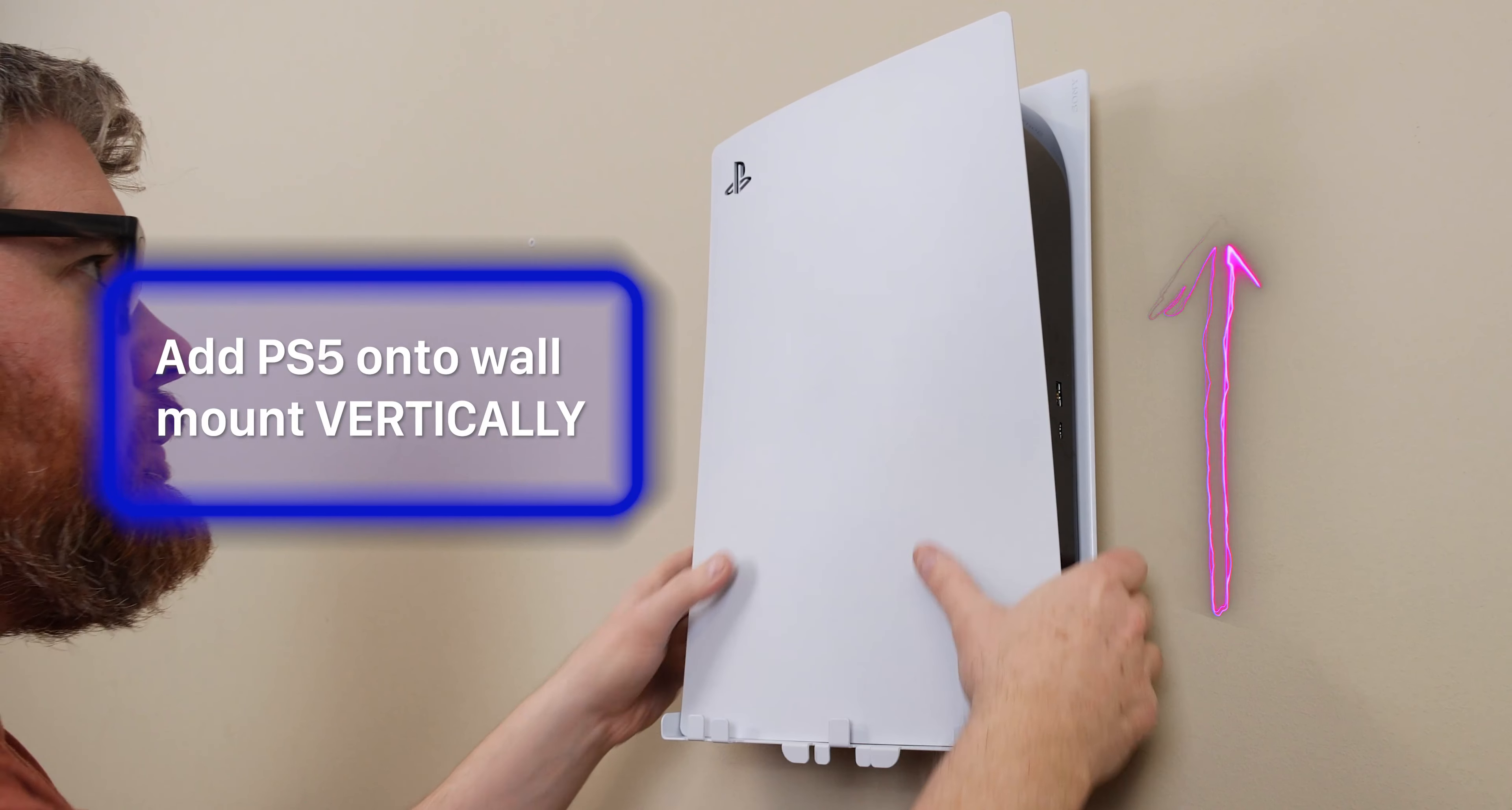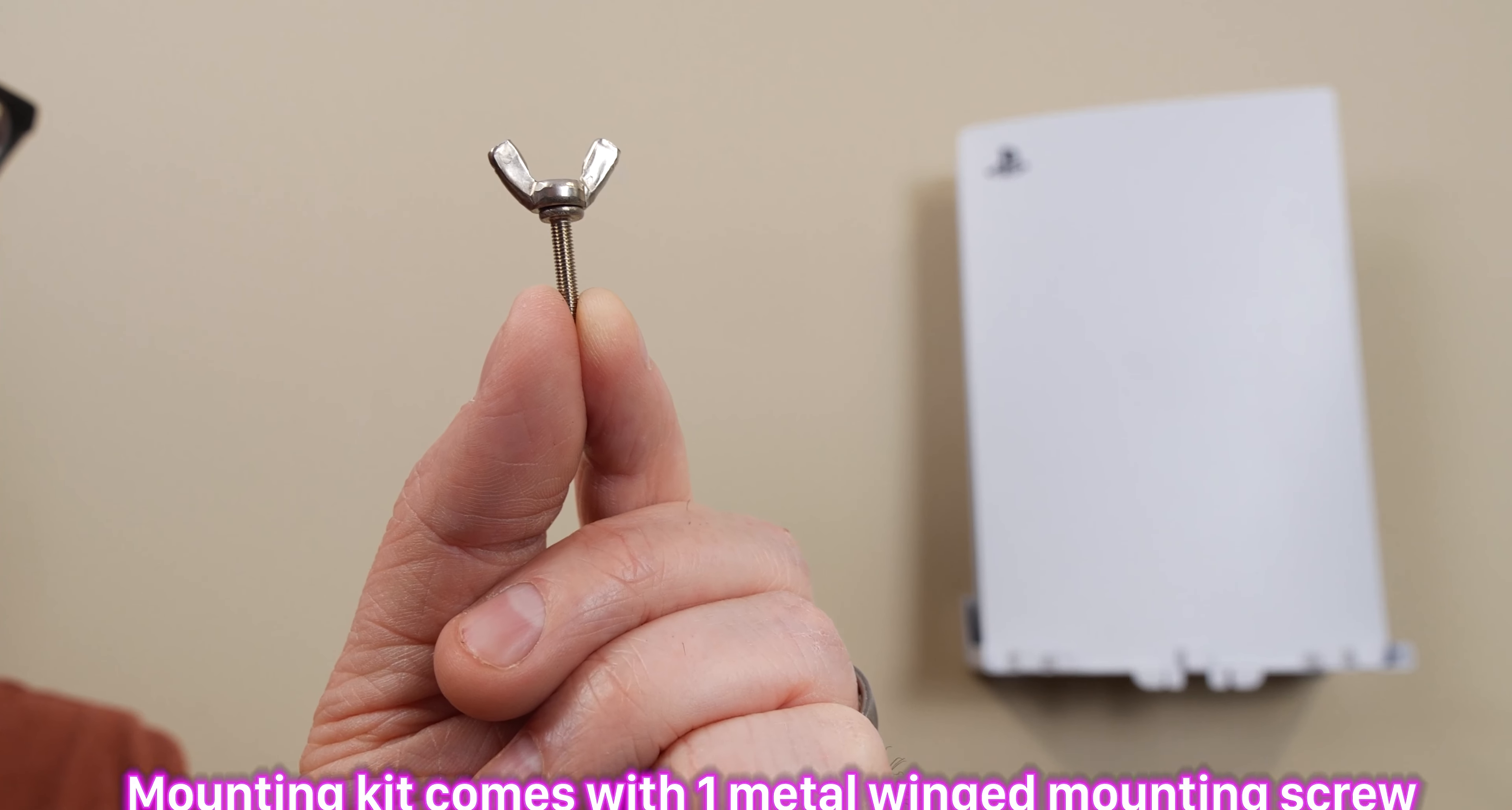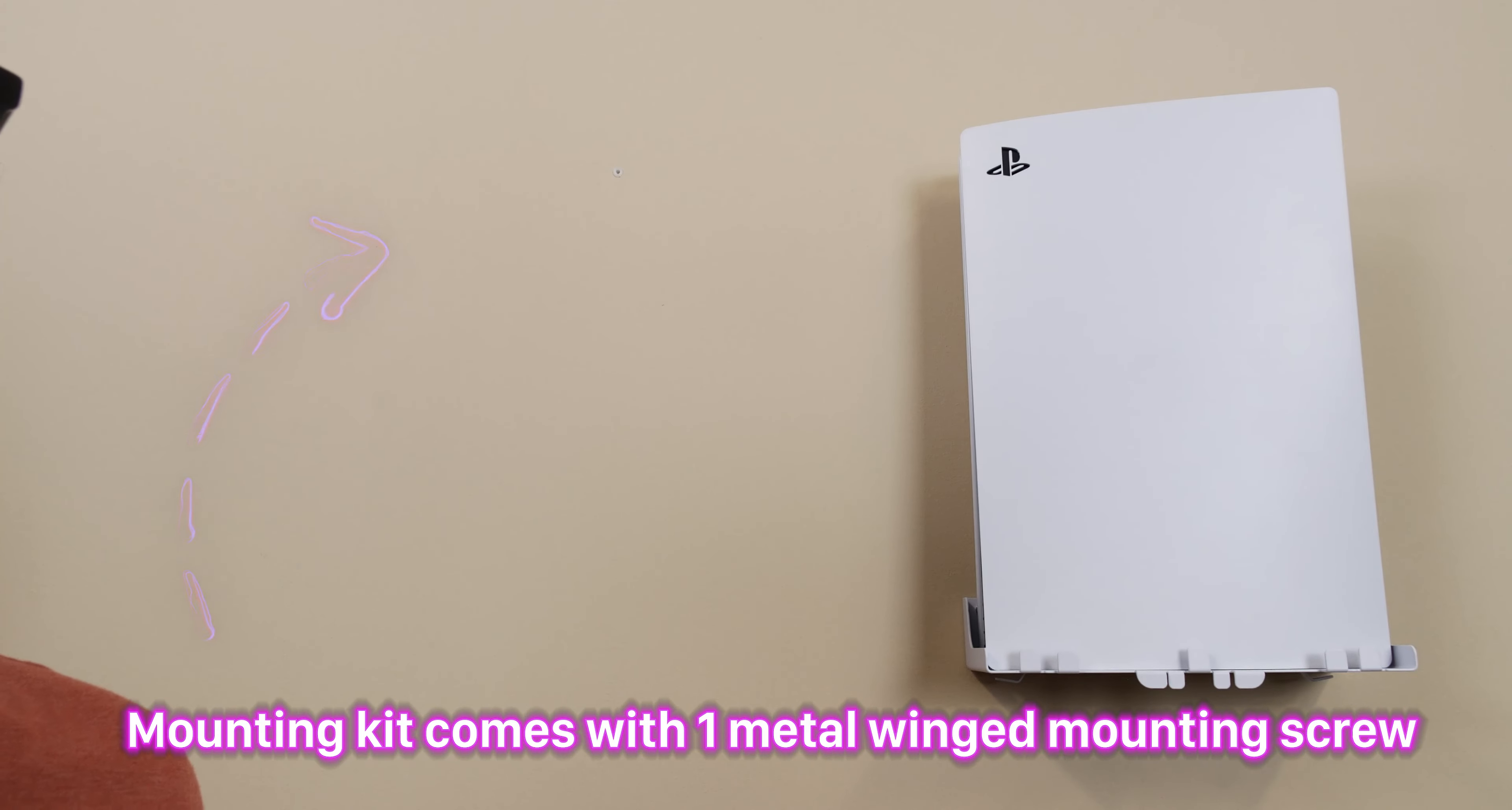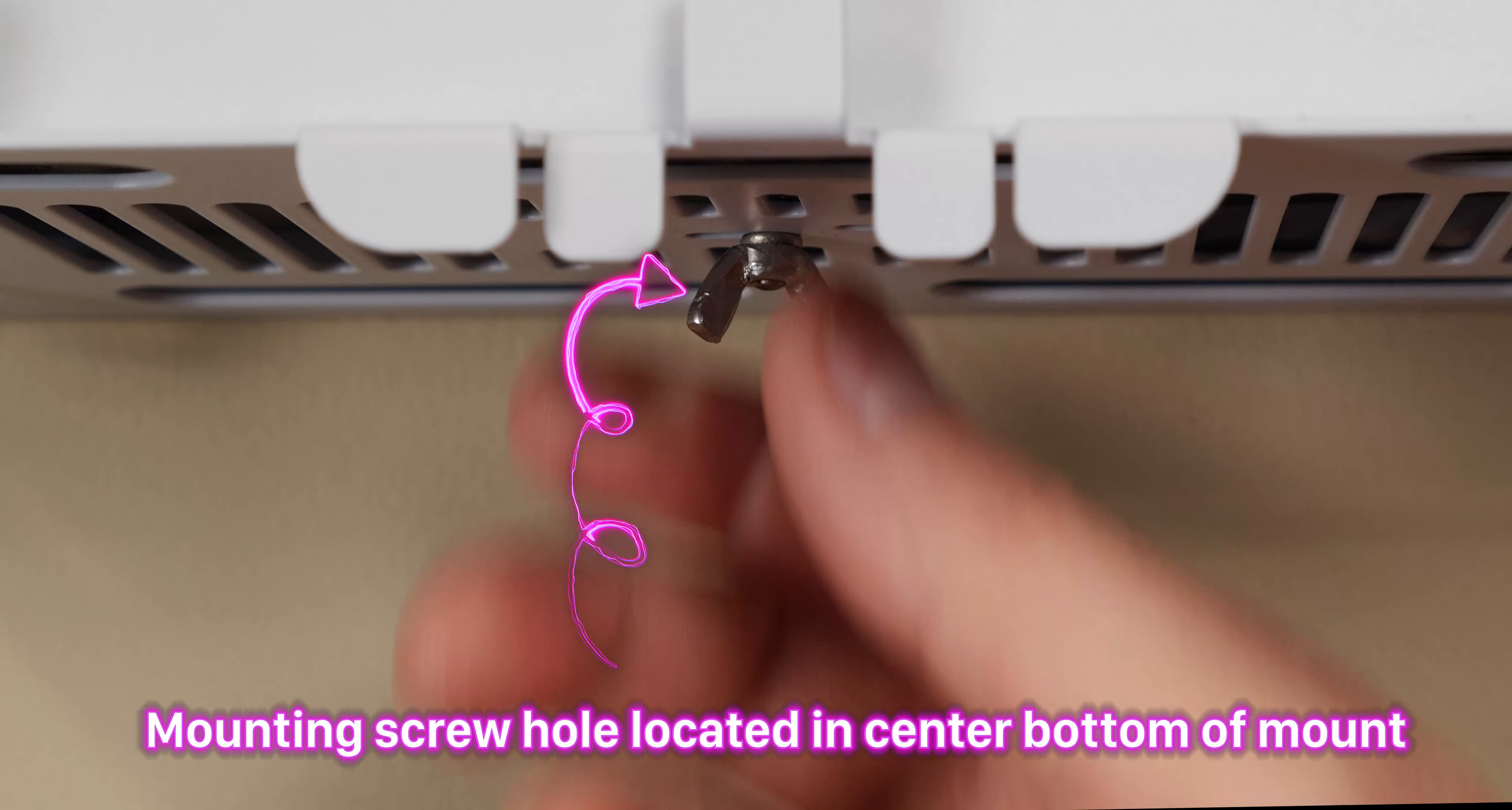Put your PS5 system on top of the wall mount vertically. It should sit perfectly on the wall mount. Use the included mounting screw or the mounting screw that originally comes with your PS5's mounting stand and screw your PS5 to the wall mount from the bottom through the mounting screw hole to ensure more stability.